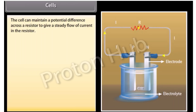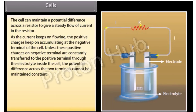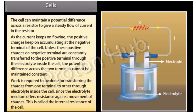A cell can maintain a potential difference across a resistor to give a steady flow of current. As current flows, positive charges accumulate at the negative terminal of the cell. These must constantly be transferred to the positive terminal through the electrolyte inside the cell to maintain constant potential difference. The resistance the electrolyte offers against movement of charges is called the internal resistance of the cell.